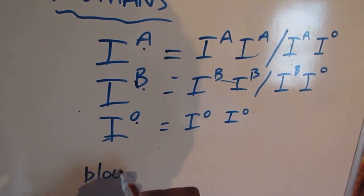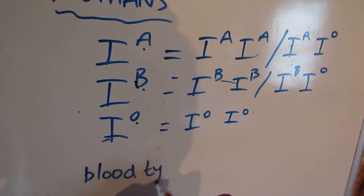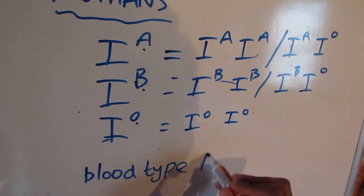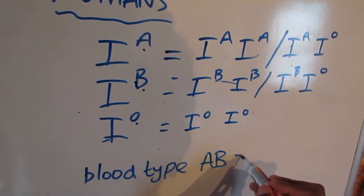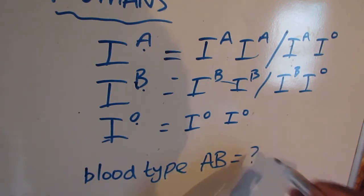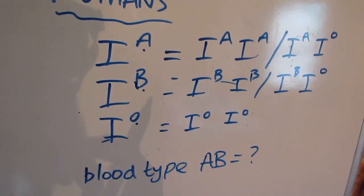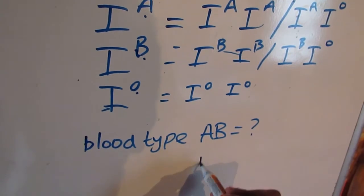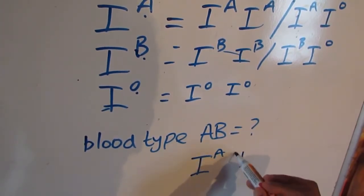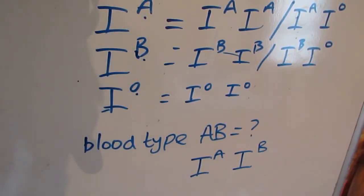So what about the blood type AB? What will be the genotype for AB? Well, the answer is it will be IA, IB. And that is telling you that A and B are co-dominant.